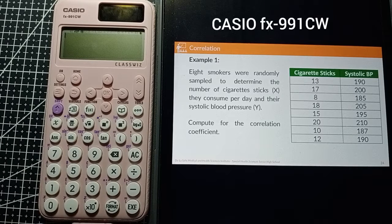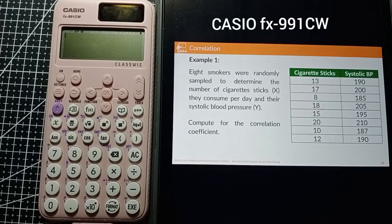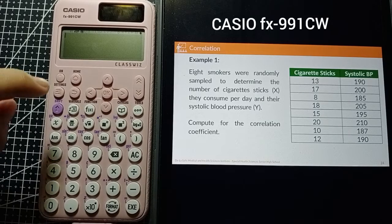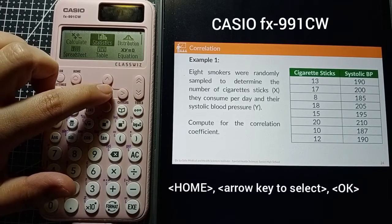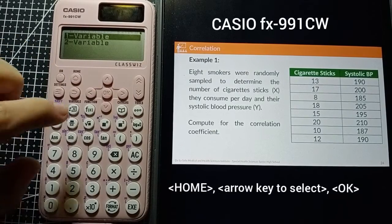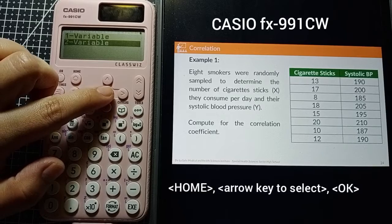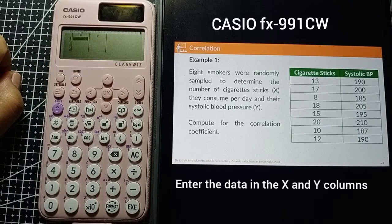First, press Home, then select Statistics, then select Two Variable. Now you will have the data entry table displayed.